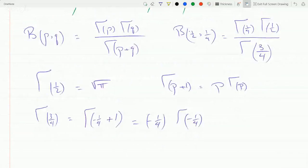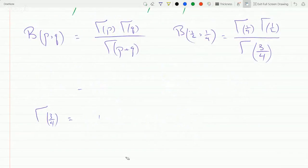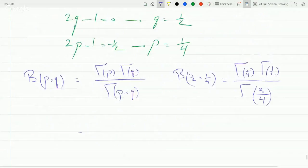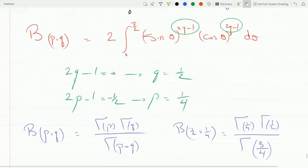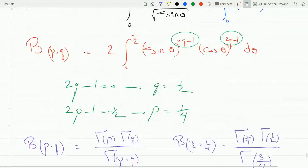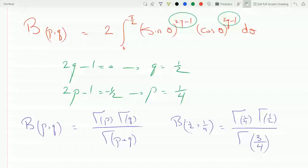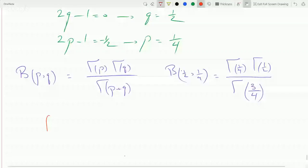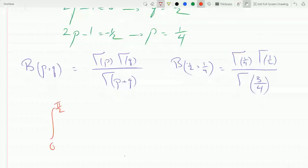Let's just get rid of this. That means our final answer for this would be one half of that, because there is one half in front of the integral. So then our final answer would be the integral from zero to pi over two equals one half times gamma one fourth times gamma one half over gamma three fourths.